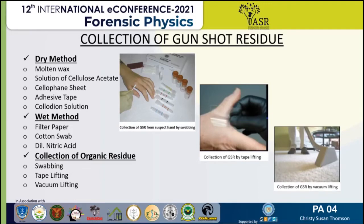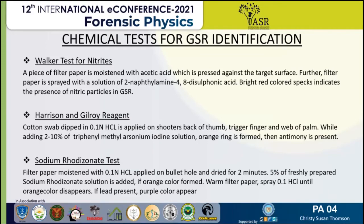Vacuum lifting is commonly done on cloth so that residues present on the cloth can be picked up. Now for chemical tests used for identification of GSR: the first is the Walker test for nitrate. A piece of filter paper moistened with acetic acid is pressed against the target surface, and later sprayed with a solution of 2-naphthylamine-4,6-disulfonic acid. If a bright red color is formed, nitrate particles from GSR are present on the suspected area.